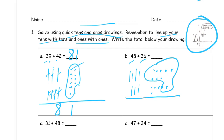There's my line. I'm going to write my digits down here. And I've got one, two, three, four, five, six, seven, eight tens and four ones — 84.